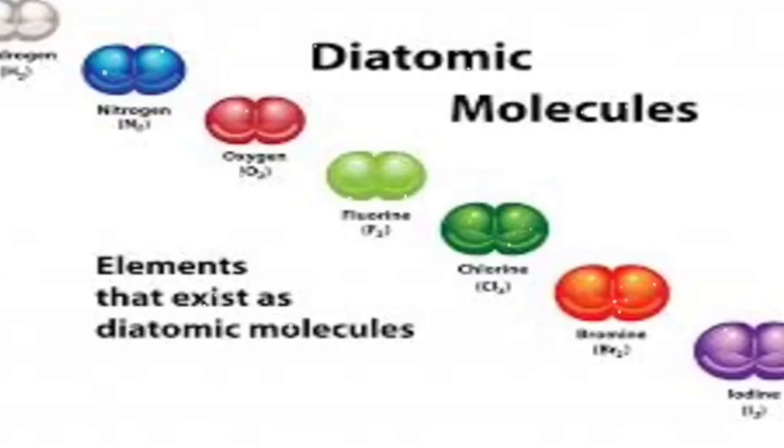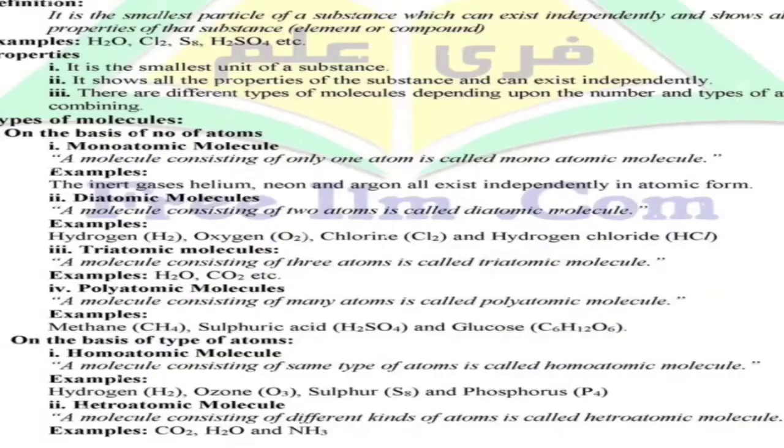O2 has two atoms of oxygen. Chlorine has two atoms of chlorine, Cl2. F2, N2, O2, iodine I2, these are the diatomic molecules that exist as elements.